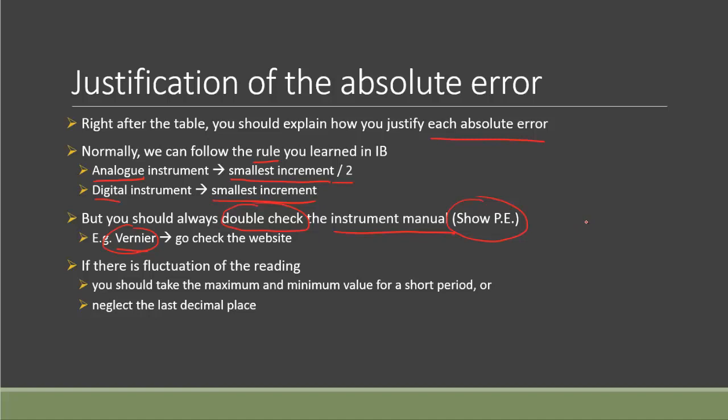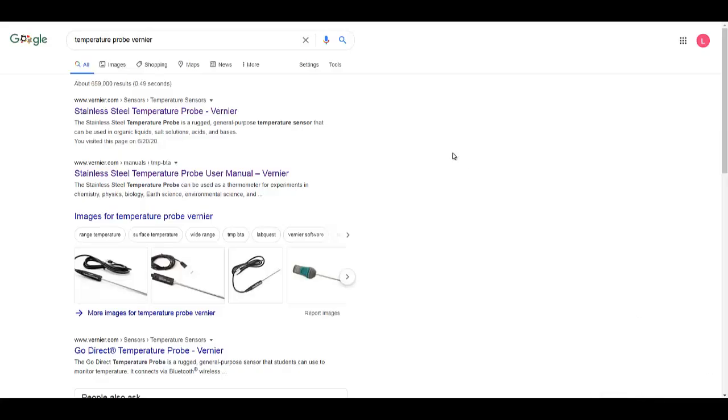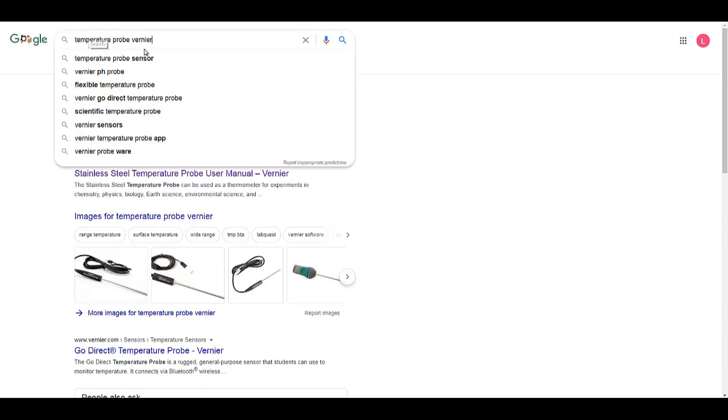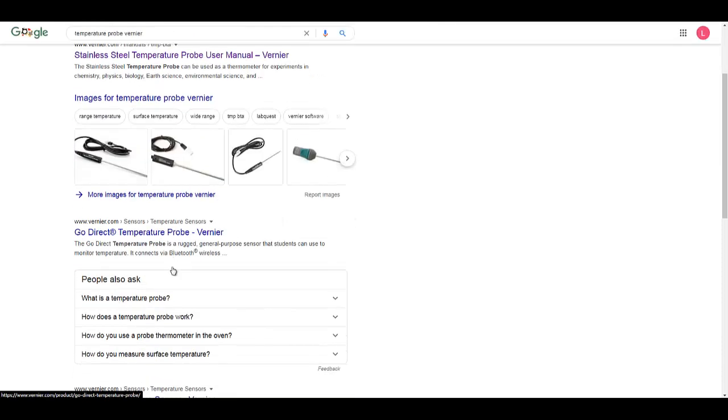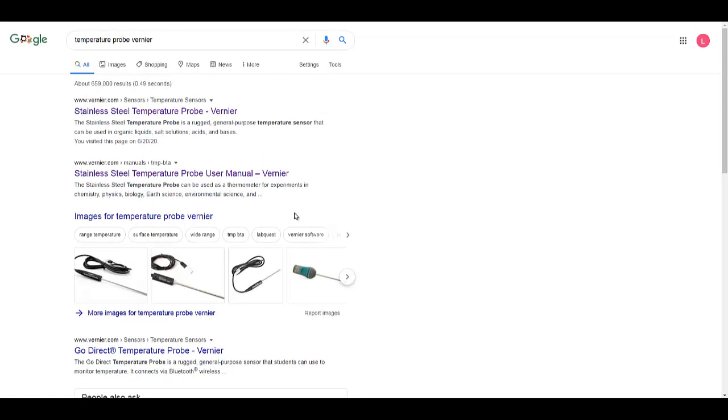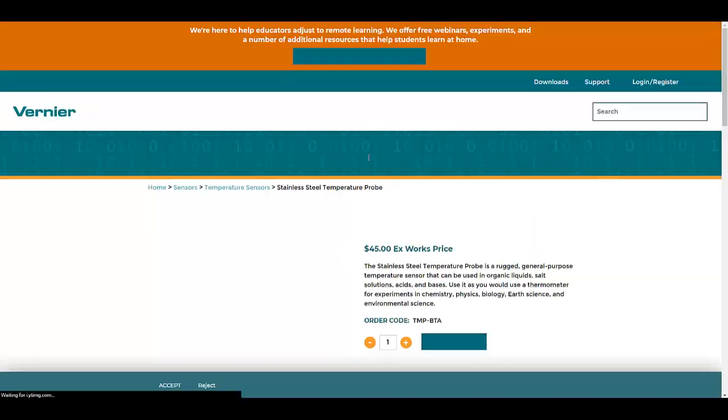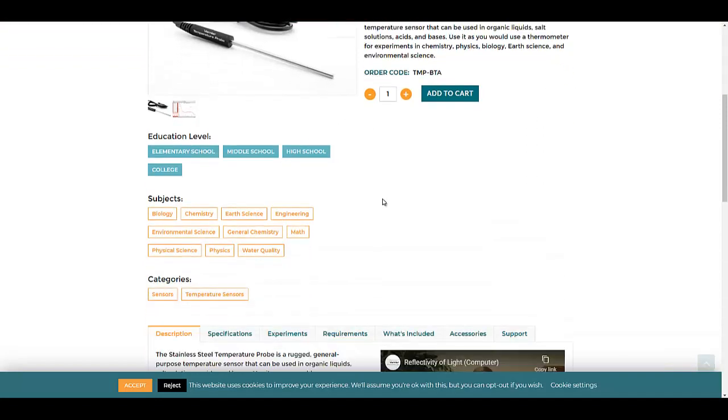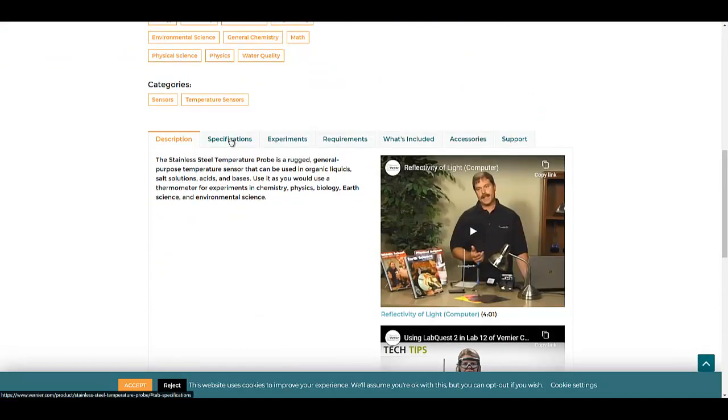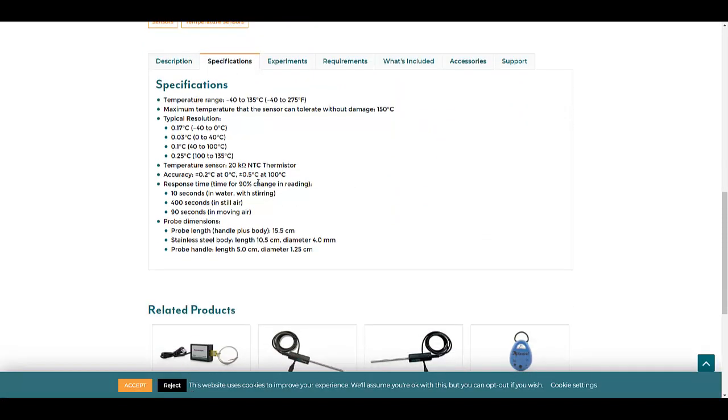On Google you can type the sensors you use, especially for vernier—say temperature probe vernier. You should be able to find different pages, usually the first few will be relevant. I'll go for the first one. Once you finish loading, double check whether the picture is the one you use. Then scroll down and there should be some tabs you can click. Specification should be the relevant one.